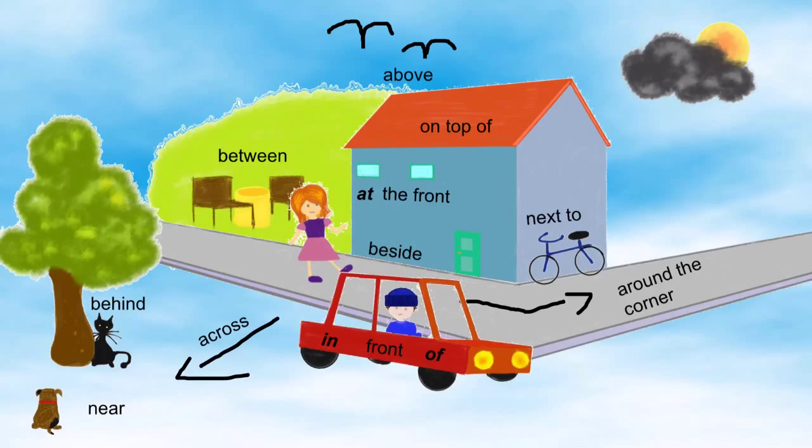Note that we always use the -ing form for things that are happening in the picture. The girl is walking, the man is driving, and the dog is watching.